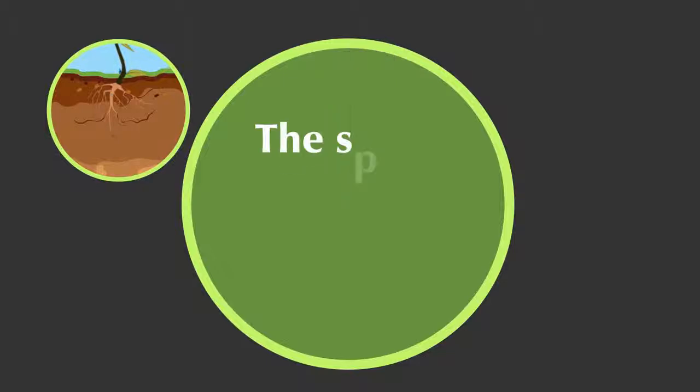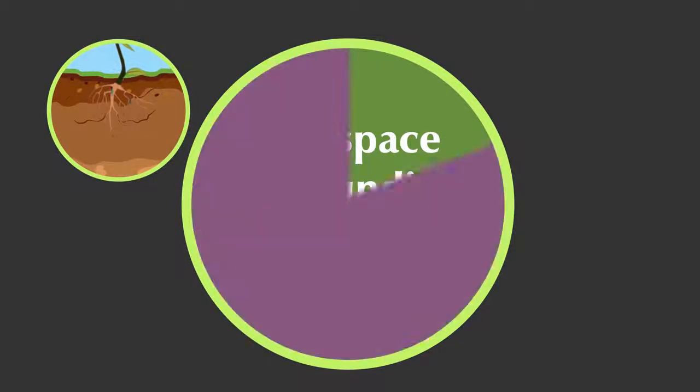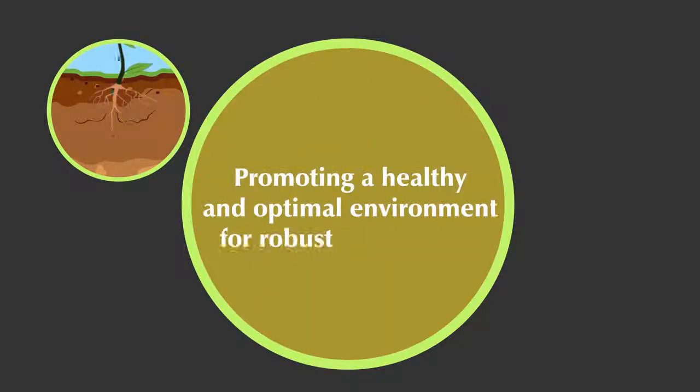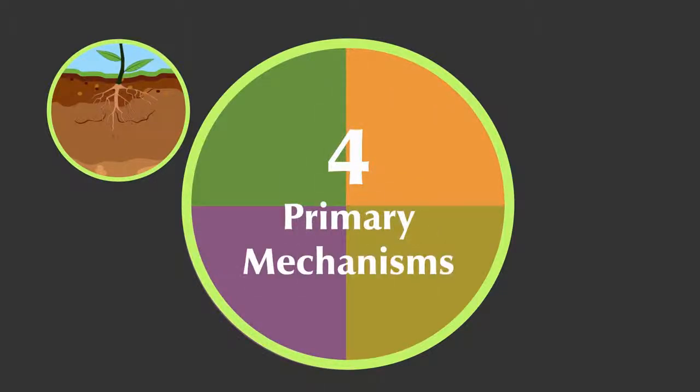It's specifically within the space surrounding the root systems that Ergopheto's biotechnology plays a critical role in promoting a healthy and optimal environment for robust plant growth. It does this by four primary mechanisms.